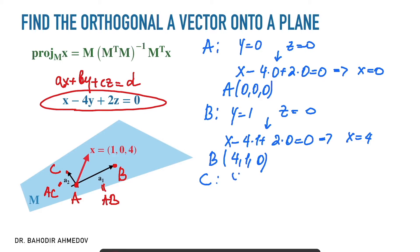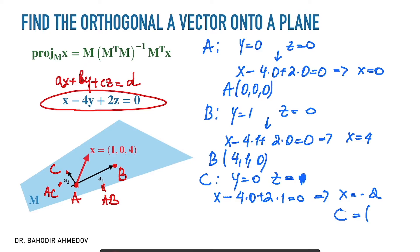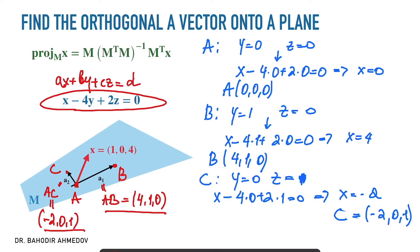In order to find point C, I'm going to set Y equal to 0 and Z equal to 1, and put this into the equation of the plane again. It's going to be X minus 4 times 0 plus 2 times 1 equals 0, which leads to X equals minus 2. So the point C is going to have the coordinates minus 2, 0, and 1. Then the AB vector is going to have the coordinates B minus A, which is 4, 1, and 0. And the AC vector is going to have the coordinates minus 2, 0, and 1. By putting these two vectors as the columns of matrix M, we obtain M equals [[4, -2], [1, 0], [0, 1]].